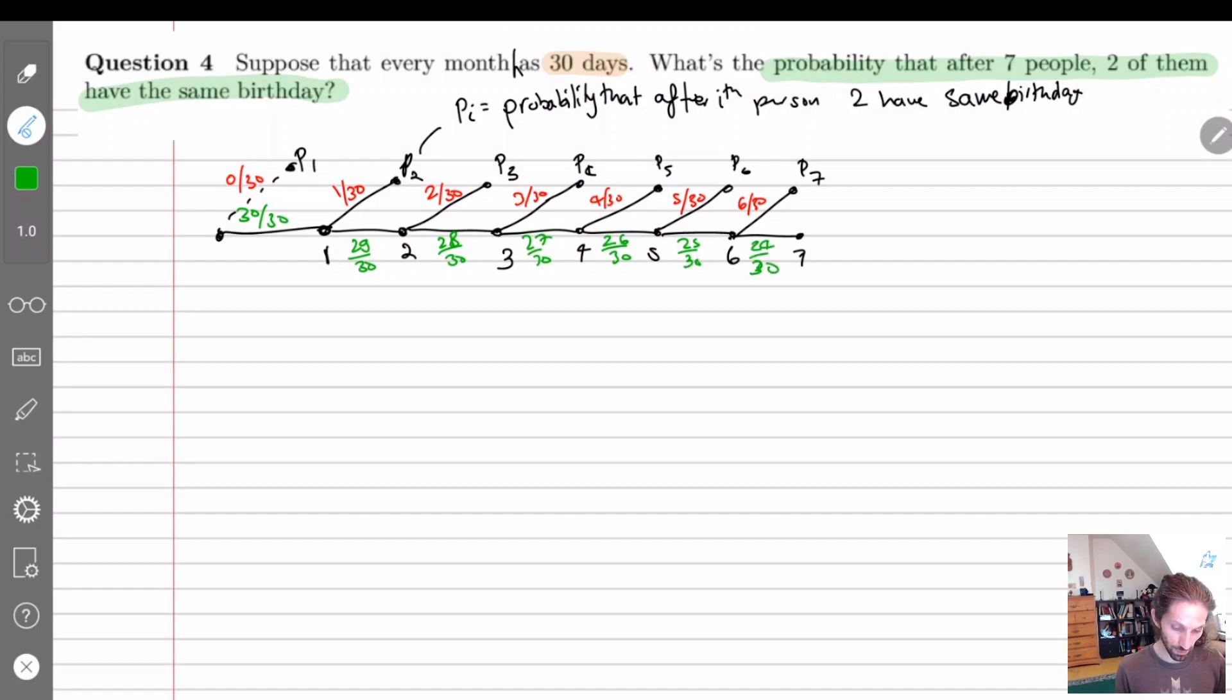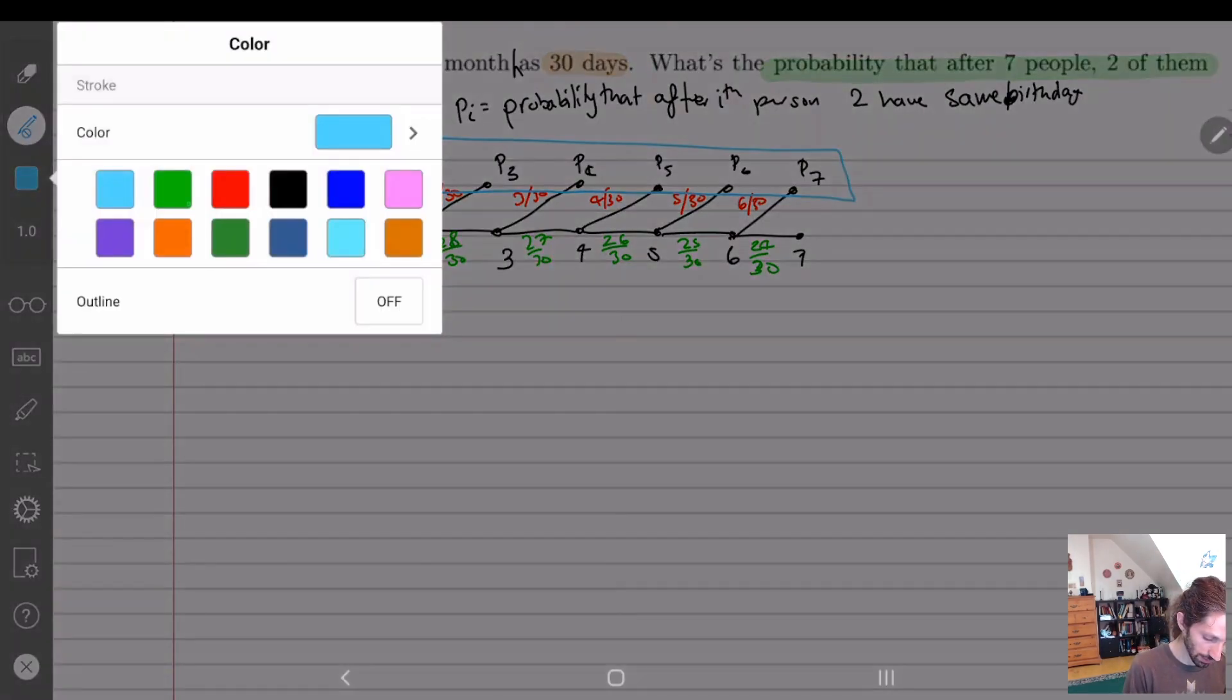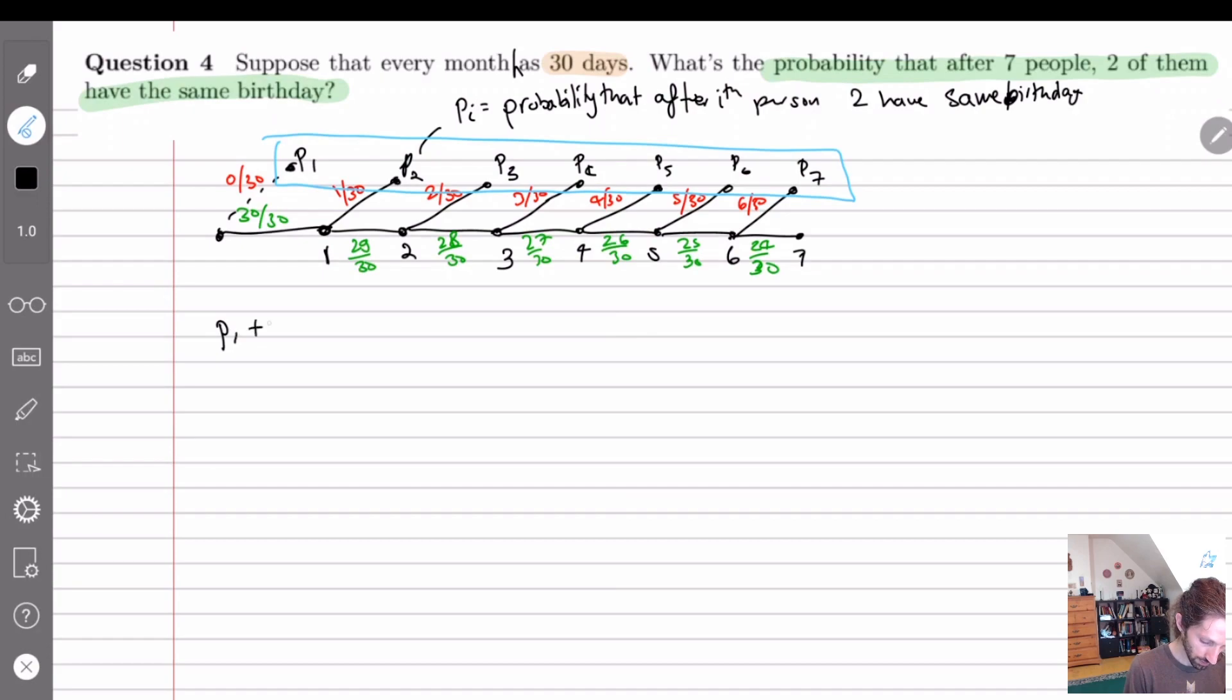Okay, so basically what's the probability that after seven people two of them have the same birthday? Well for us it doesn't really matter if it was after the first person, the second one, third, fourth, fifth, sixth, or seventh. It can be any of these numbers. So really what we want is P1 plus P2 plus P3 plus P4 plus P5 plus P6 plus P7.